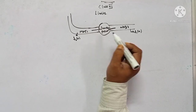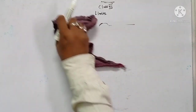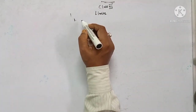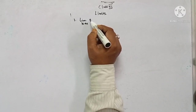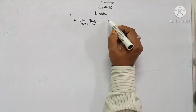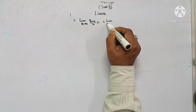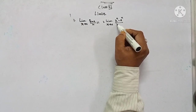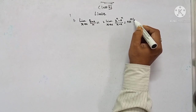Now there are a few standard formulas of limits. First: limit x tends to 0 of sin(x)/x equals 1. Second: limit x tends to a of (x^n minus a^n) divided by (x minus a) equals n times a to the power n minus 1.